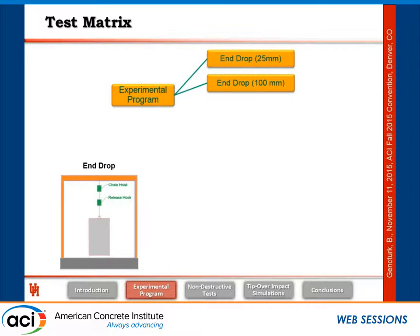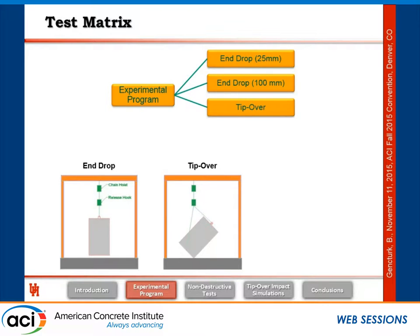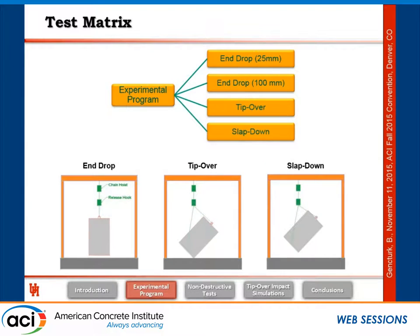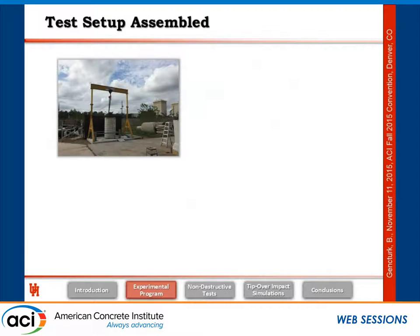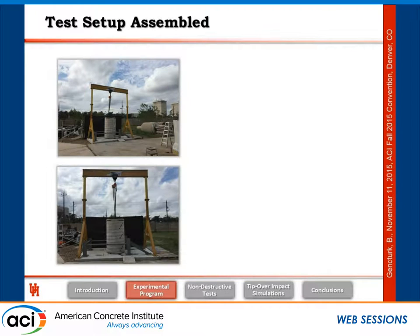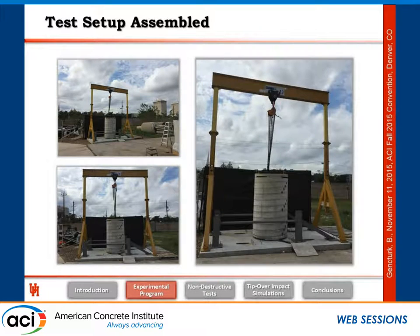For impact testing, we will do three tests. The first is an end drop test — dropping the casks on their bottom from one inch and four inches. Then a tip-over test, and finally a slap-down test if the casks survive the tip-over. The test setup is at our outdoor facility at the University of Houston, which has an overhead crane and a retaining frame to prevent the cask from rolling sideways when it tips over.